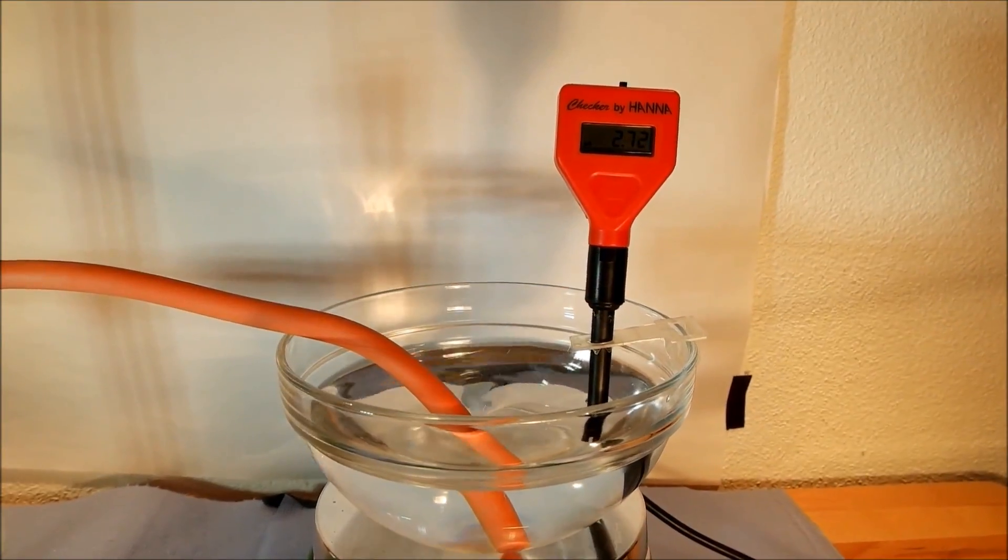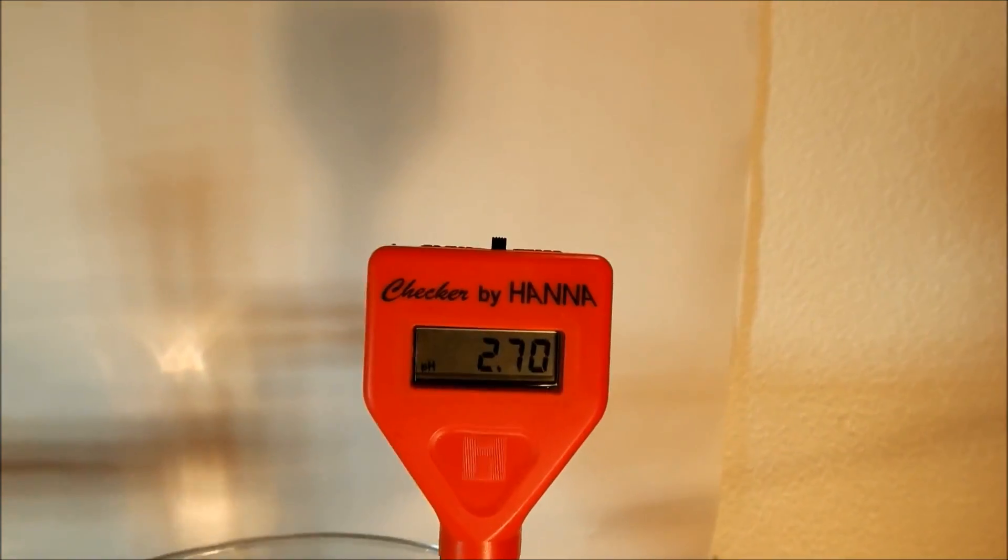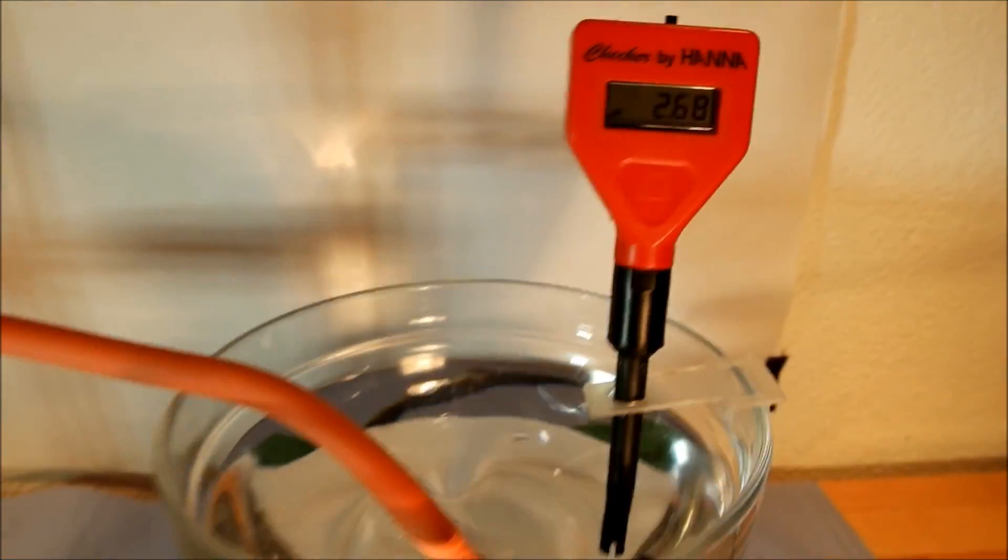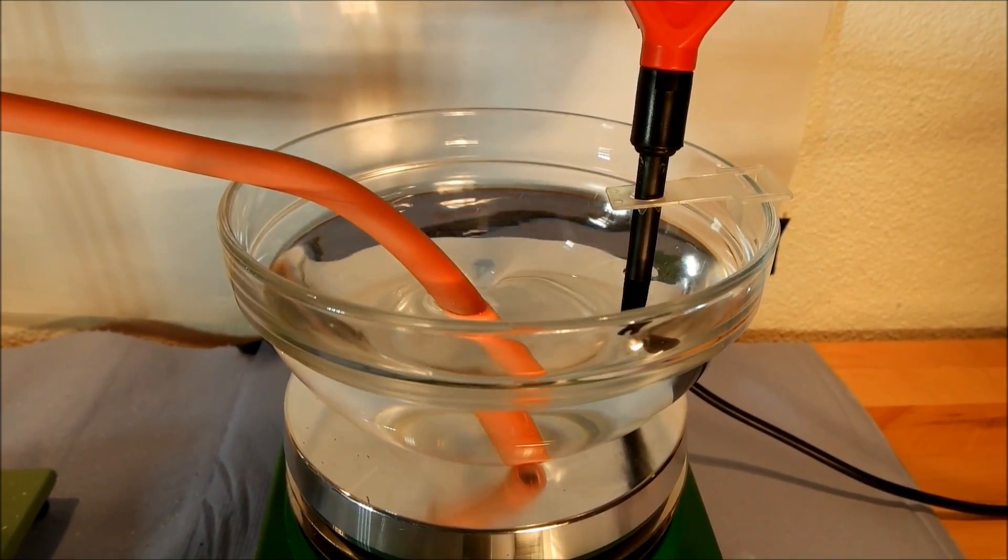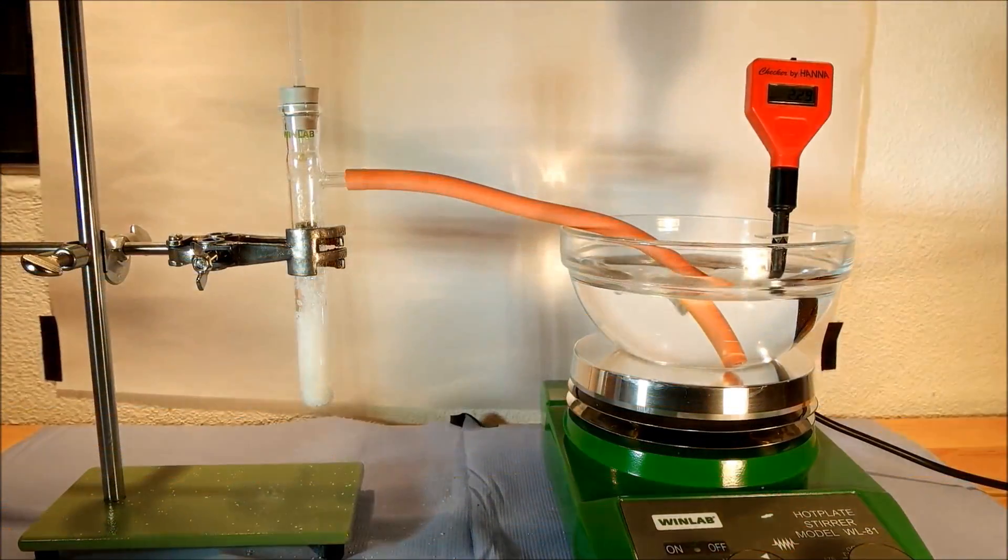The pH meter, which first showed a pH of around 7, now shows a pH of 2.6 because the hydrochloric acid gas in the water makes an acidic solution.